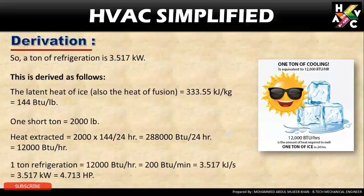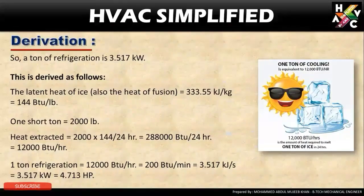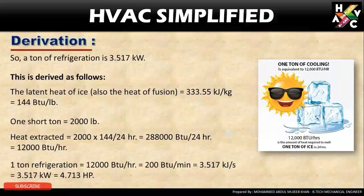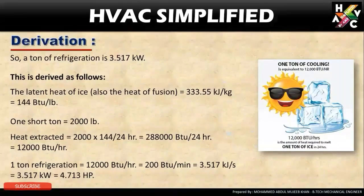Now, one ton of refrigerant is equal to 12,000 BTU per hour, which is also equal to 200 BTU per minute, and equals to 3.517 kilojoules per second, which is equal to 3.517 kilowatts, and equals to 4.713 horsepower. So the common value used for one ton of refrigerant is equal to 12,000 BTU per hour.